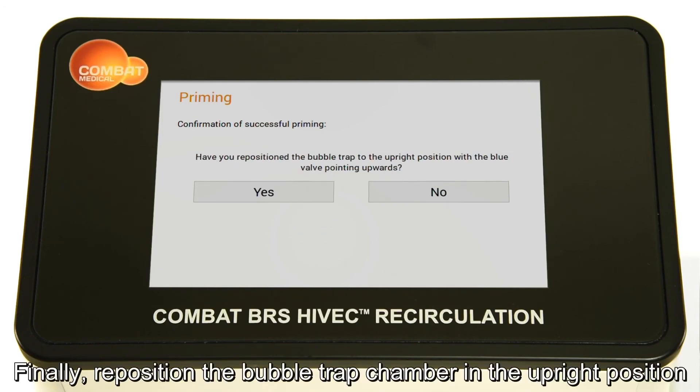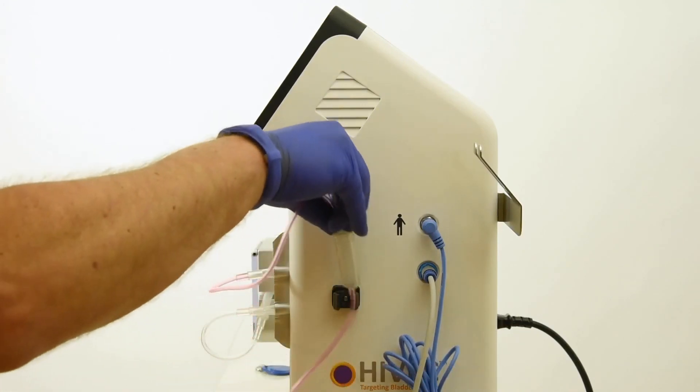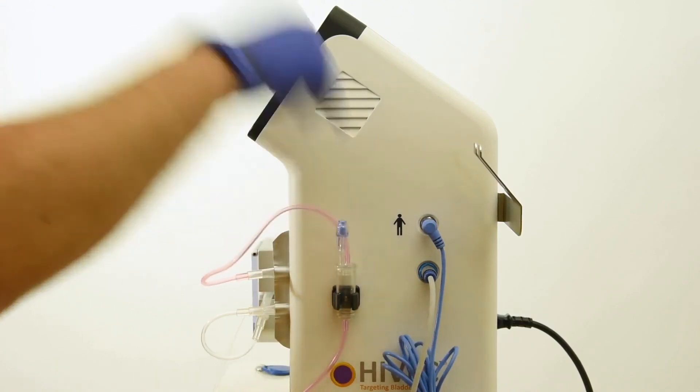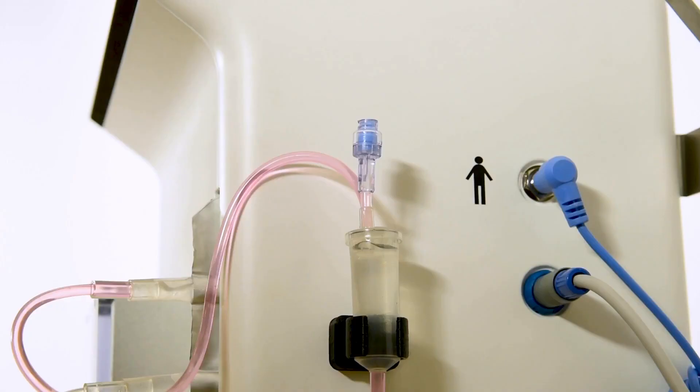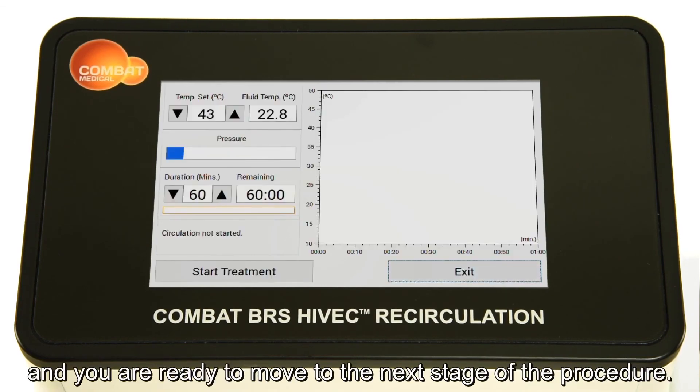Finally, reposition the bubble trap chamber in the upright position with the blue valve pointing upwards. At this stage you may remove the syringe and replace the white screw cap. Having confirmed, the treatment screen will appear and you are ready to move to the next stage of the procedure.